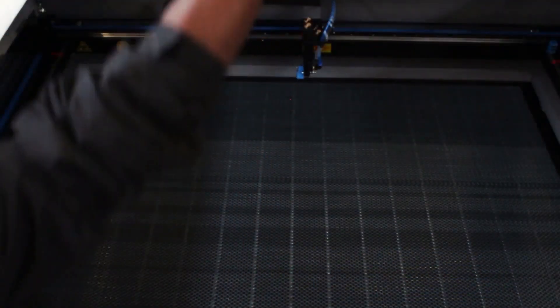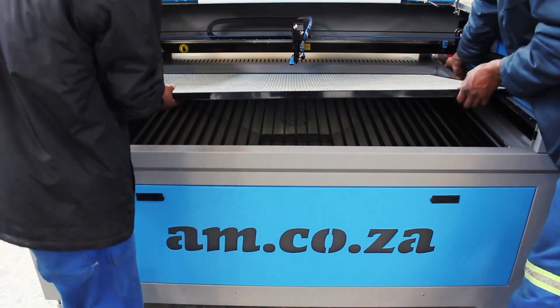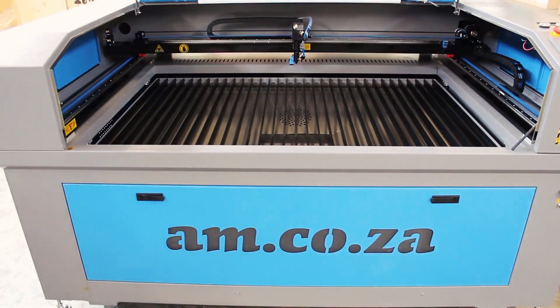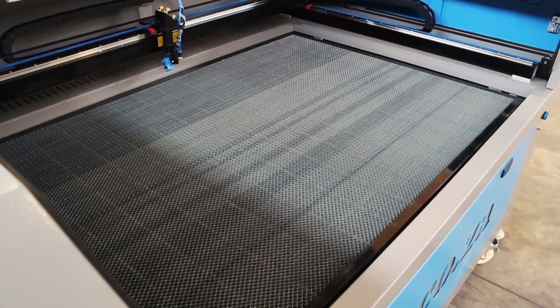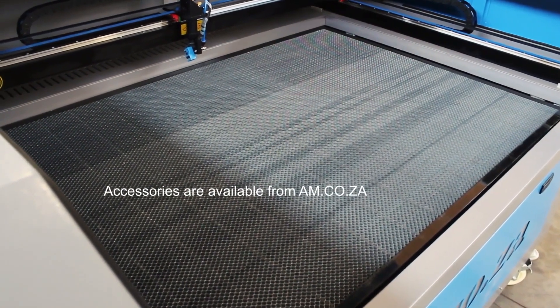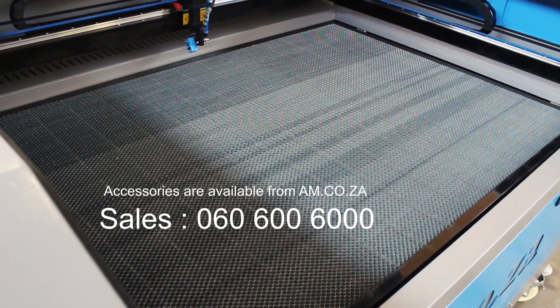All TruCut laser cabinets from am.co.za come with a honeycomb table as a standard feature and it's removable. You can simply slide it off to expose the slat table, and you can purchase honeycomb tables separately directly from am.co.za. Just call sales for more information.